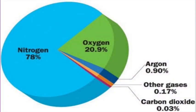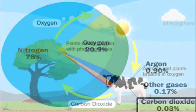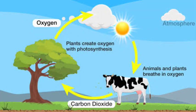Two of these gases are oxygen and carbon dioxide. All living beings use the oxygen in air to breathe, and plants use carbon dioxide to make food. They use a part of the food they make and store the rest.